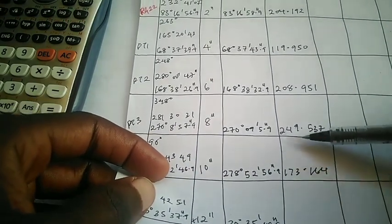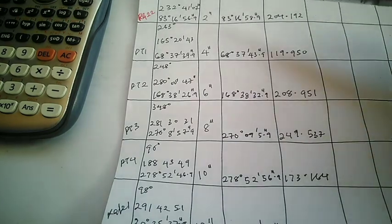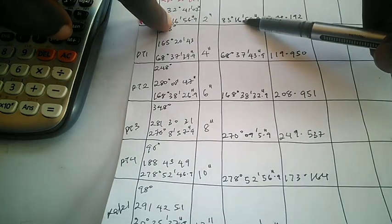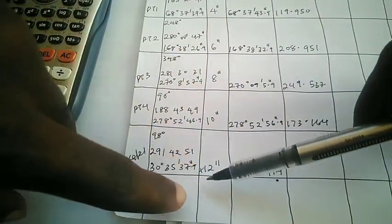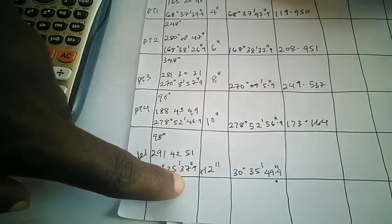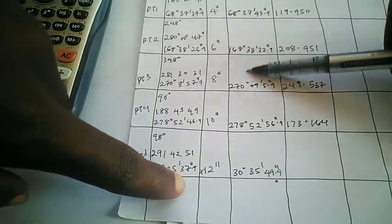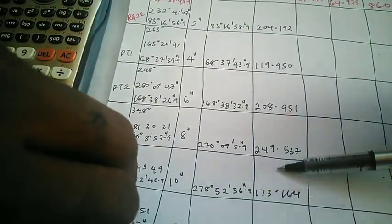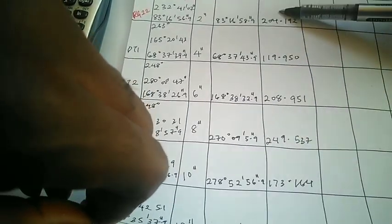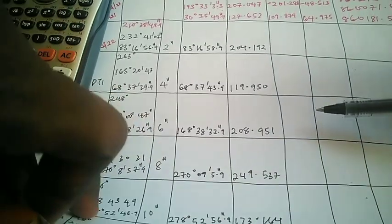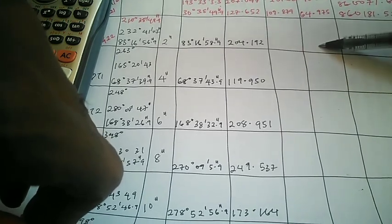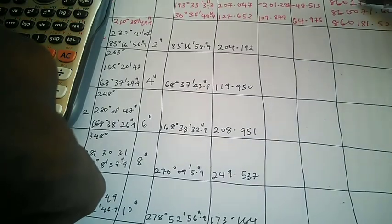Thank you very much for coming to this video. I hope you've been able to understand how you can apply your correction to your forward bearing to get the corrected bearing. Since our error here, or the misclosure, was positive, all the corrections were positive — hence we added them to the forward bearing. And these are our horizontal distances, corrected for slope and other errors. On our next video, we'll be able to compute for our partial coordinates, which is latitude, departure, delta north, delta east, which we'll later apply to our coordinates.